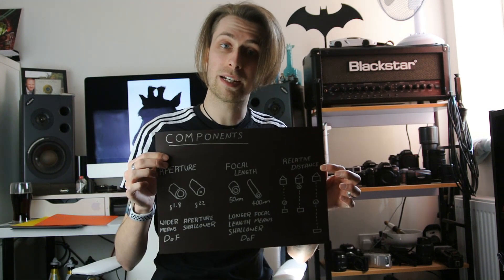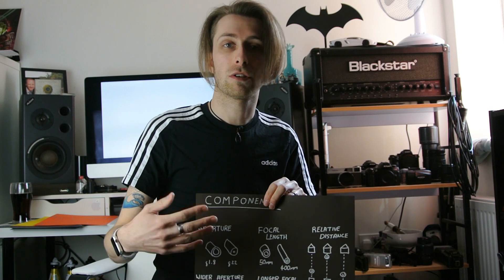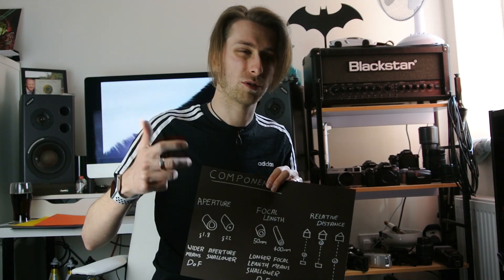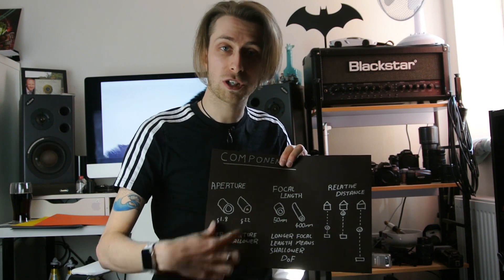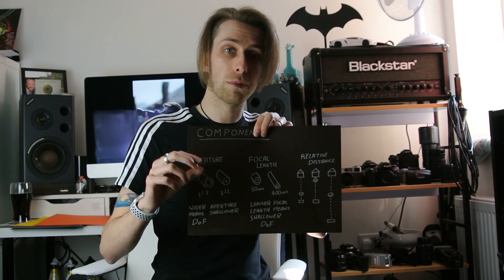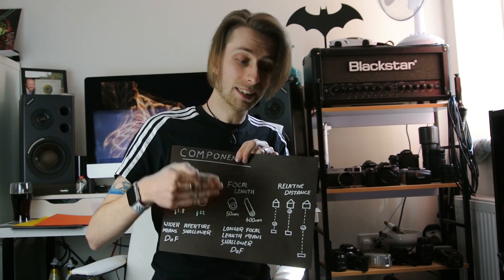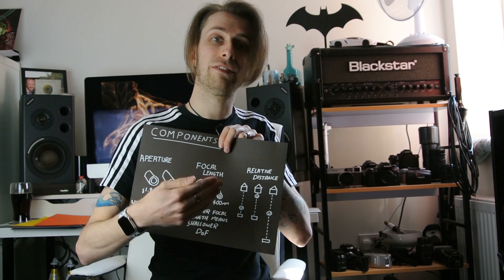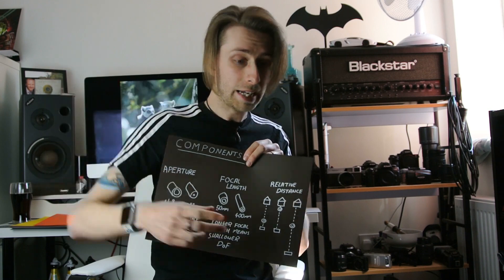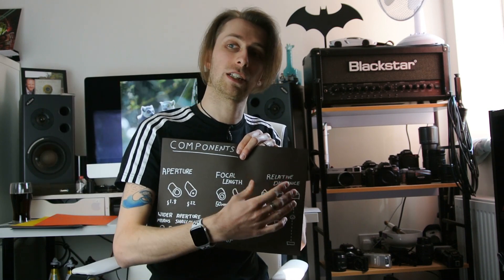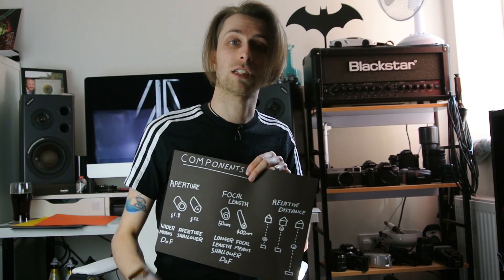We're going to break it down into three components, which I'll go through in further detail at the back end of the video. So if you're not too interested in how these things actually work and you just want to get a real sense of it, you don't have to watch it. But the three components are: aperture — the size of the opening in the lens; focal length — how long or short a lens is; and then the relative distance from your camera to your subject, and from your subject to your background. Relative distance is what we're going to be focusing on today, to allow you to achieve those nice, shallow depth of field looks using something like a smartphone.